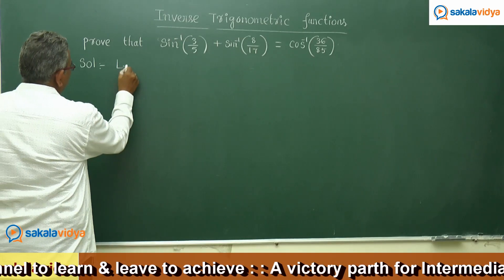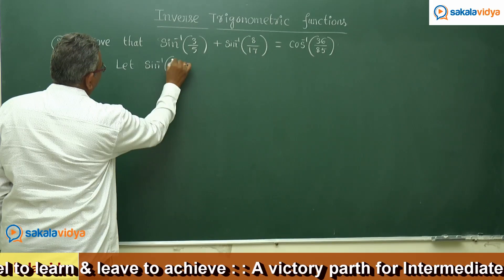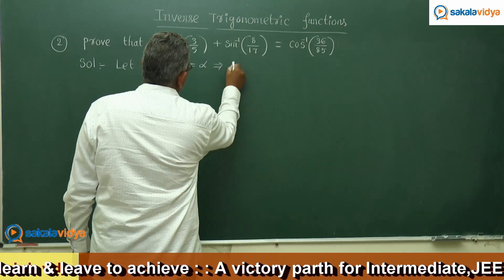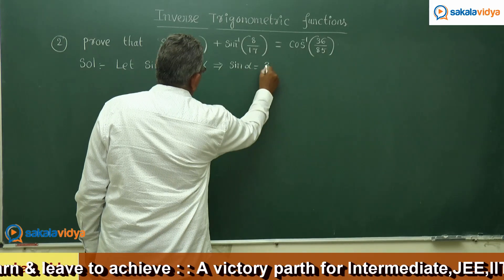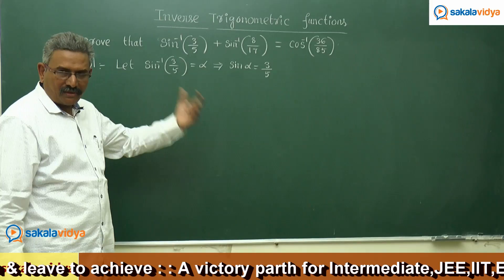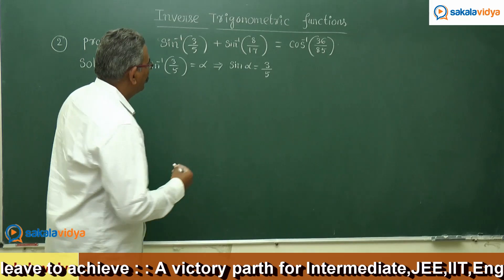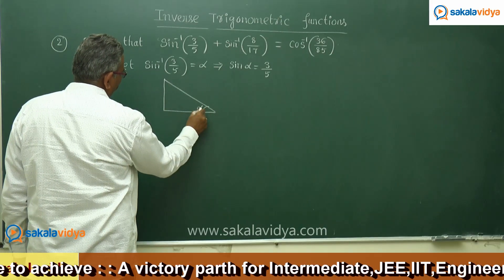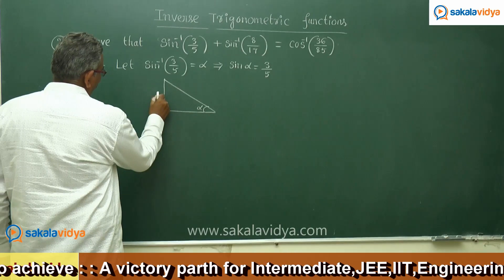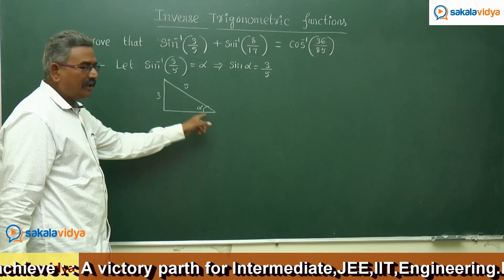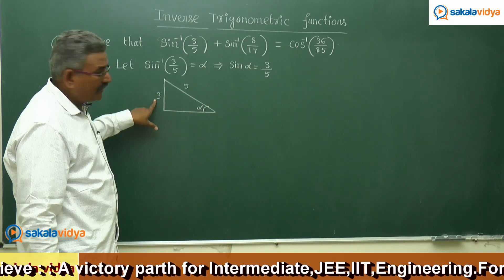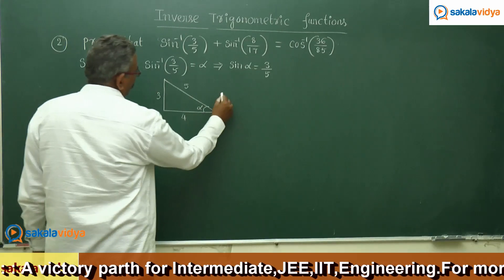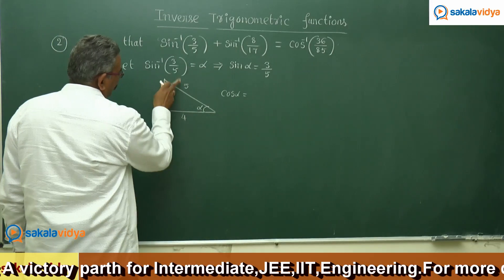Let sin inverse of 3 by 5 equal alpha. That implies sin alpha equals 3 by 5. We need to find cos alpha. Taking a right triangle and specifying angle alpha, sin alpha equals opposite over hypotenuse, so the opposite side is 3 and hypotenuse is 5. The adjacent side is square root of 25 minus 9, which is square root of 16, equal to 4. So cos alpha equals adjacent side by hypotenuse, that is 4 by 5.